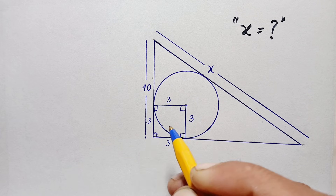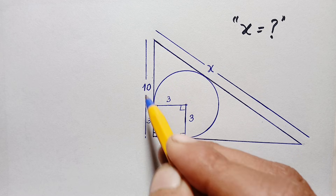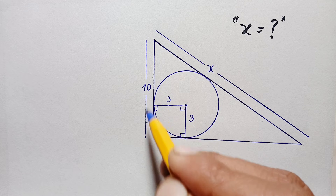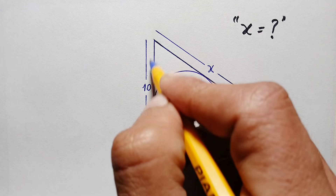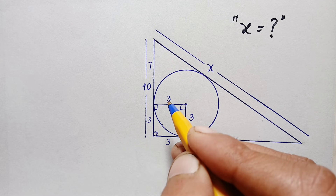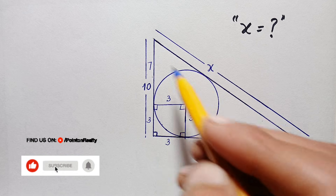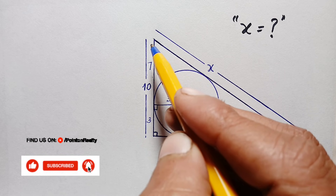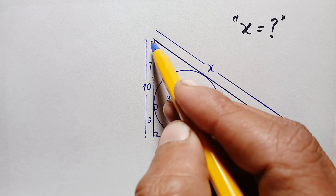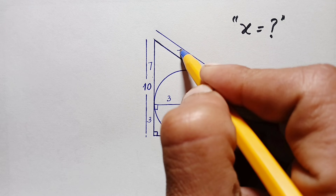Now we focus on the vertical side of the triangle, which has a total length of 10 units. Since one segment of that side is 3 units, the remaining length is 10 minus 3, which equals 7 units. Applying the two-tangents-to-a-circle theorem — two tangents drawn from the same external point are equal in length — the other tangent from that point is also 7 units.